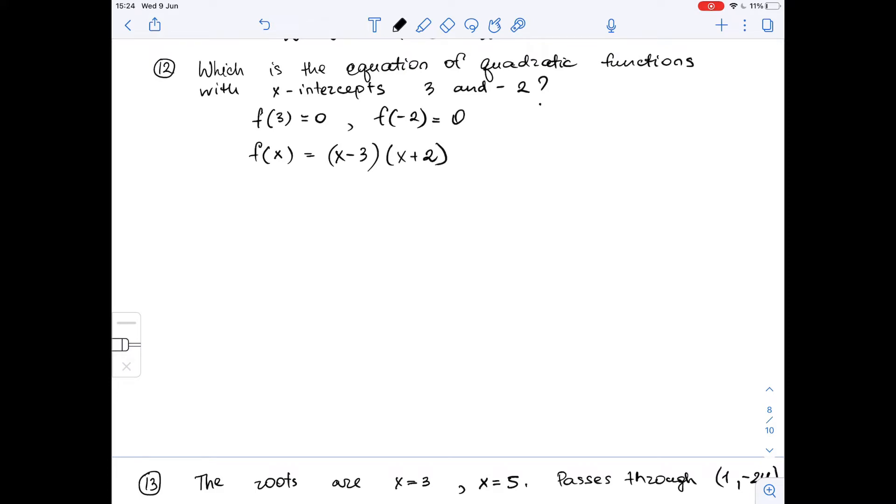Let's simplify it. We get that f of x is equal to x squared plus 2x minus 3x minus 6. Let's simplify it again. We get that f of x is equal to x squared minus x minus 6.